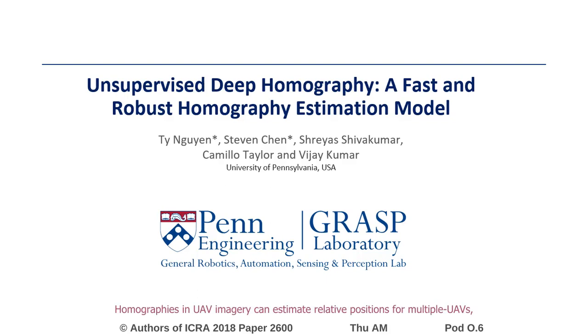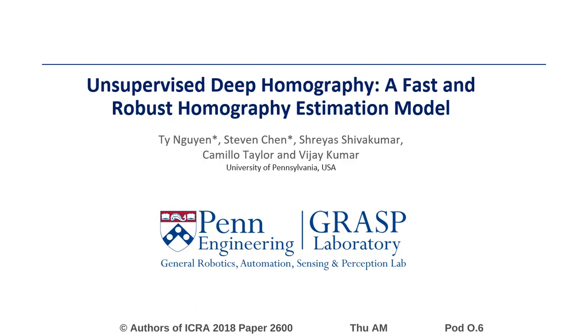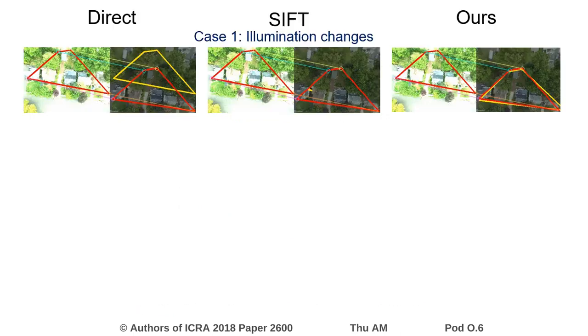Homographies and UAV imagery can estimate relative positions for multiple UAVs, which is important for GPS-denied scenarios. Our research presents a reliable and fast algorithm for homography estimation.